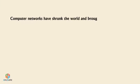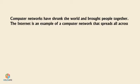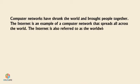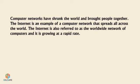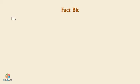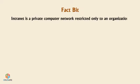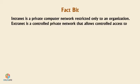Computer networks have shrunk the world and brought people together. The Internet is an example of a computer network that spreads all across the world, also referred to as the worldwide network of computers, and it is growing at a rapid rate. Intranet is a private computer network restricted only to an organization. Extranet is a controlled private network that allows controlled access to an information source available on the Internet.